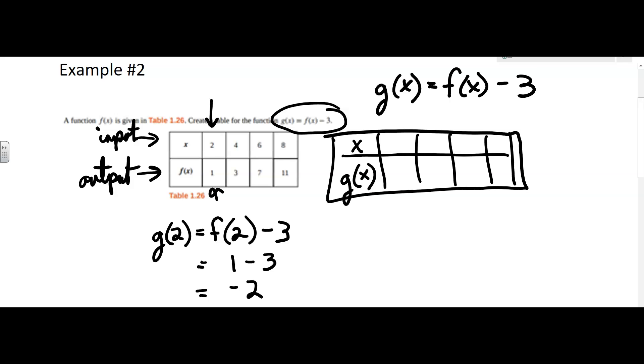Now to complete your table then, your new table, 2 was the input, right? That's what we put in. What did we get out? A negative 2.